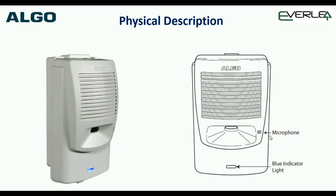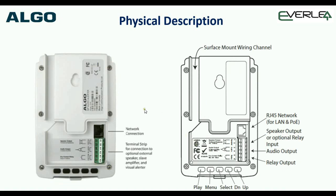An example use case would be a classroom where you've got an 8180 for paging, and you can ring it and people can actually talk back — for example if you're looking for the teacher. The blue light indicator at the bottom tells you the status of the system, and you can also program it to be a message waiting light. If there's a message in the office, it'll sit there flashing blue.